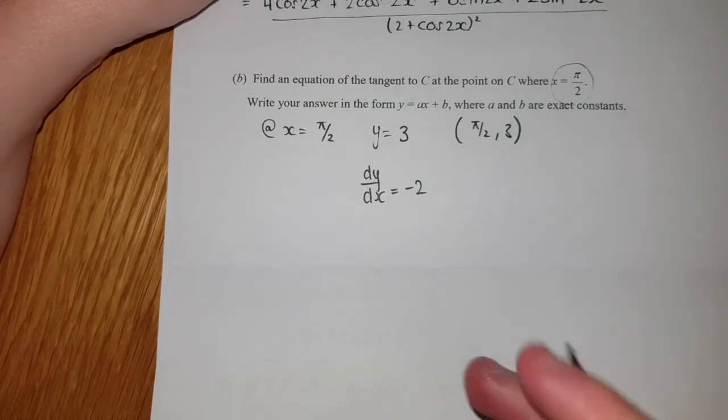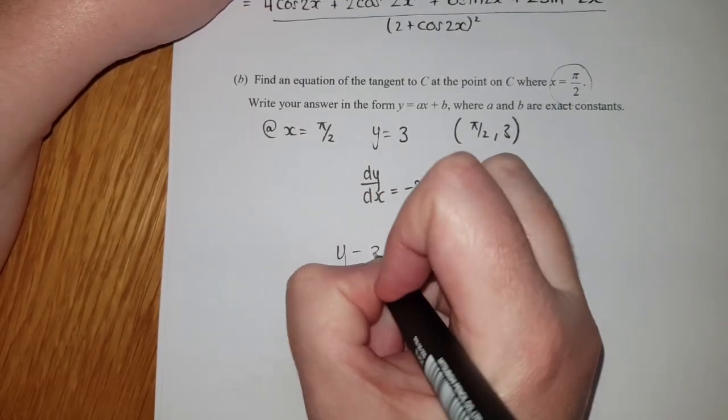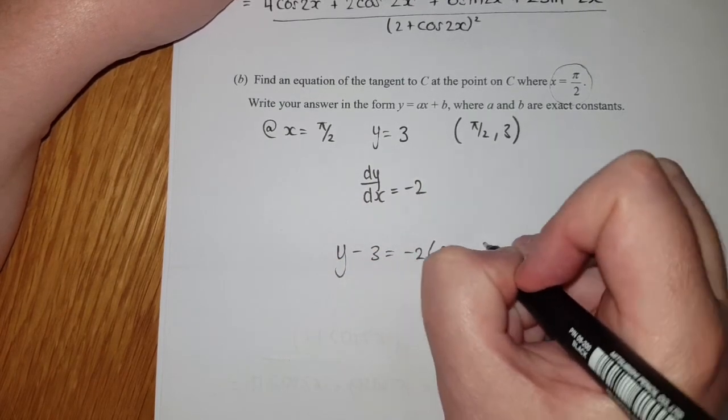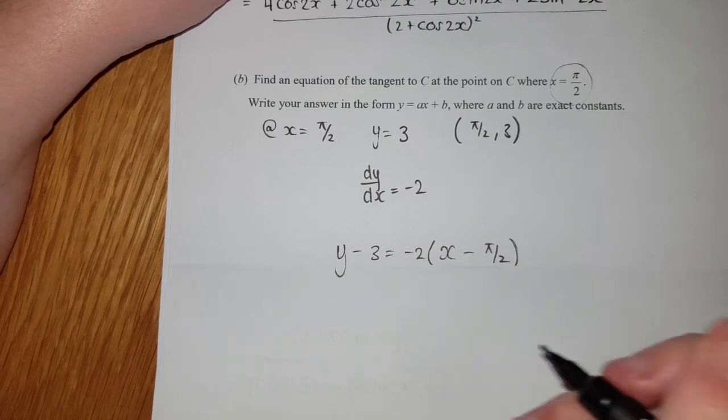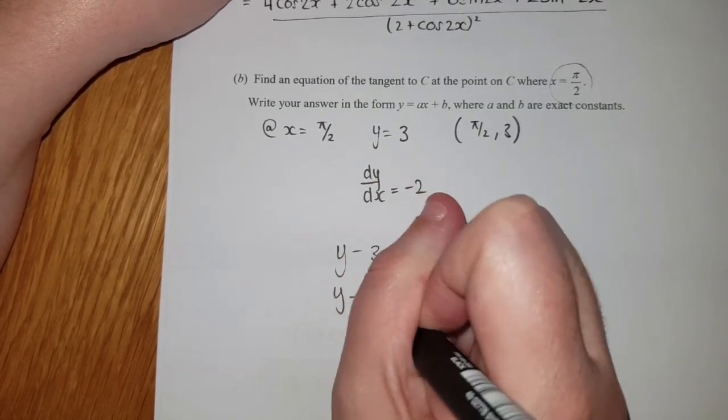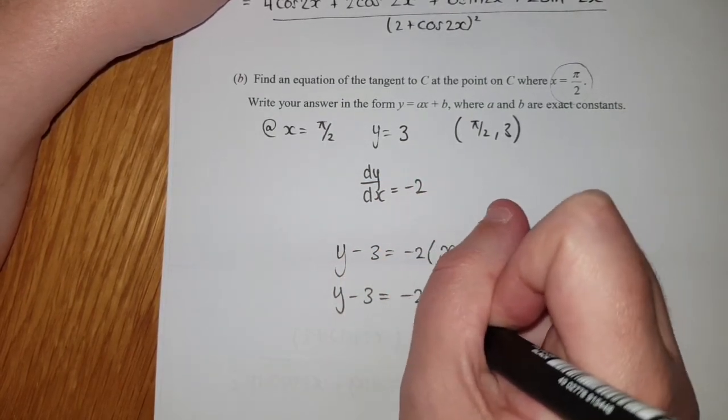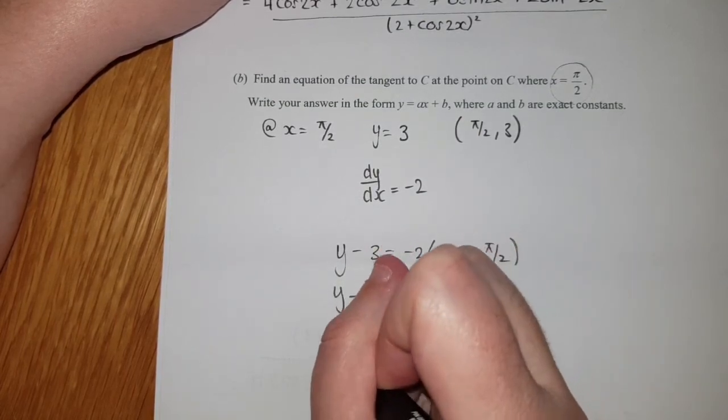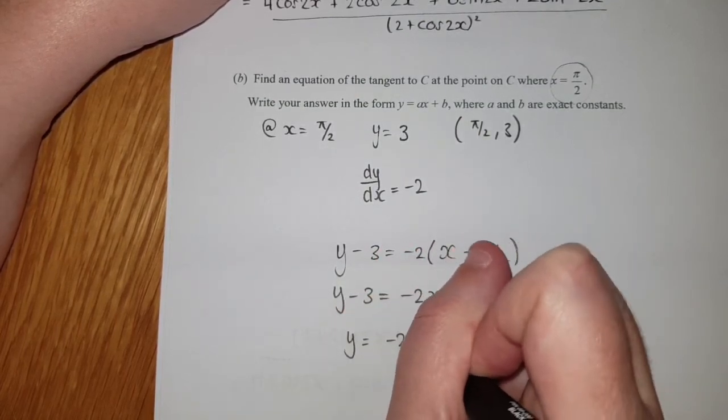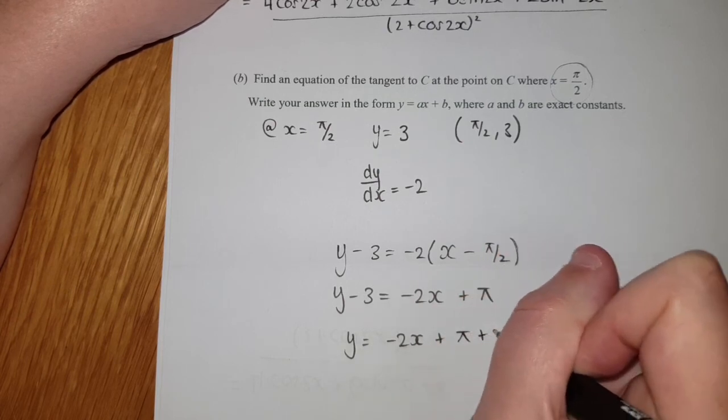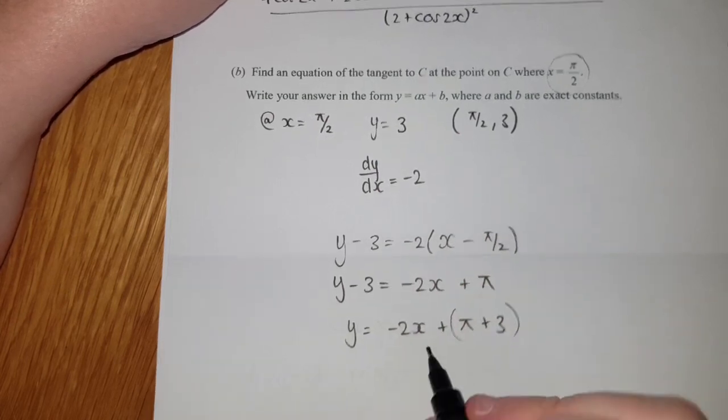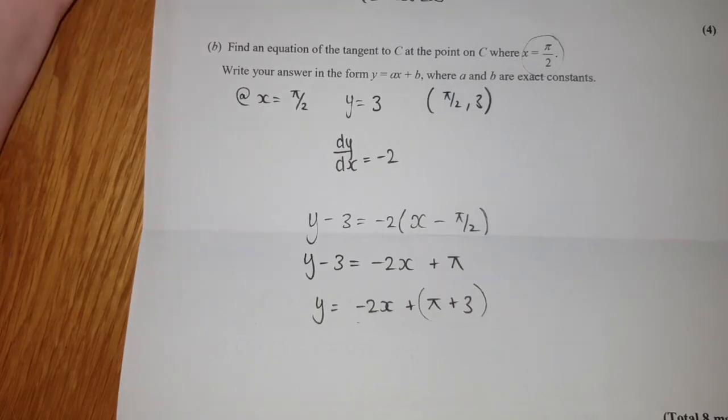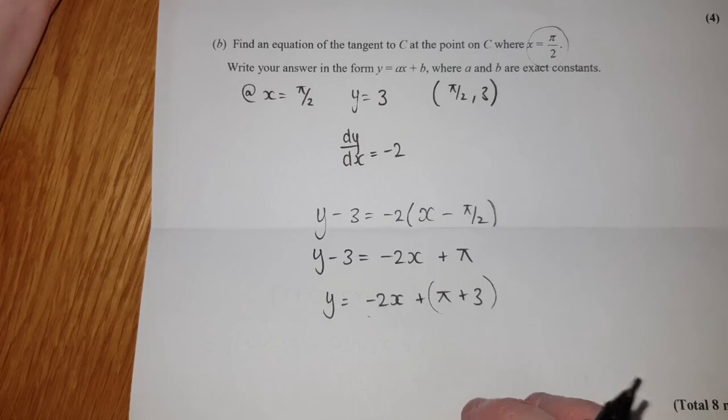And then all you're going to do is chuck it into your formula: y - 3 = -2(x - π/2). Leave the left-hand side as it is for a minute. If I distribute the -2, I get -2x + π. Then we're going to add 3 to both sides: we get y = -2x + π + 3. That is basically your b term (π + 3), and your a term is obviously -2. And that's it—a bit more of an awkward question, but that one is done.